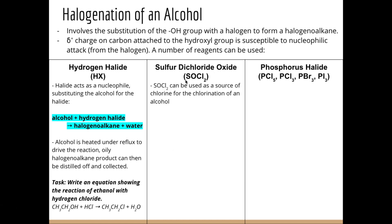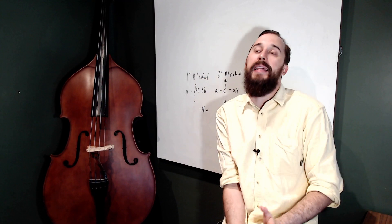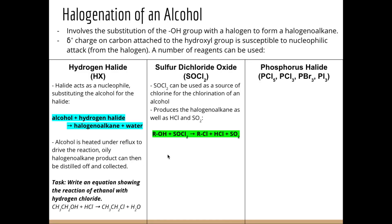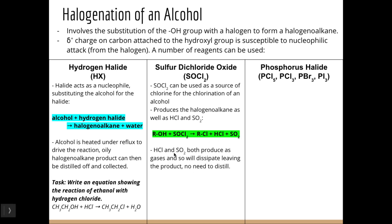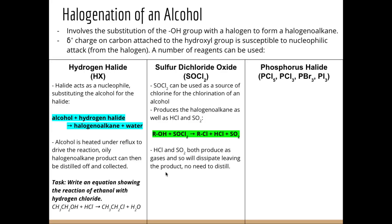Sulfur dichloride oxide, also called thionyl chloride, can be used as a source of chlorine for the chlorination of an alcohol. It produces the haloalkane — a similar product to using HCl — but SOCl2 is only for chlorinating, whereas HX can be used for brominating or iodinating. We also produce HCl and sulfur dioxide as byproducts. Sulfur dioxide has a particularly pungent characteristic smell — like a freshly struck match. Both HCl and SO2 are produced as gases, so there's no need to distill afterwards, as they simply evaporate, leaving the haloalkane behind.